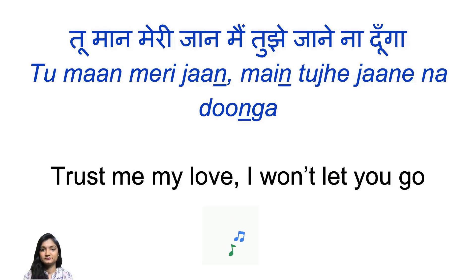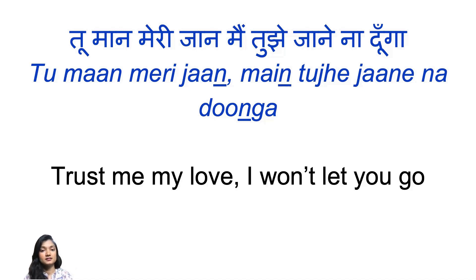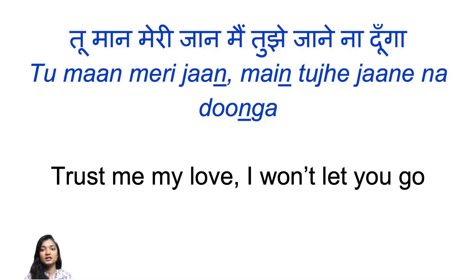And now comes the chorus part. Tu maan meri jaan, ma tujhe jaane na dun ga. Maan comes from the verb maanna, which means to trust or to believe. So the first part means: believe me or trust me, my love. The second part is: main tujhe jaane na dun ga — which means I won't let you go, or I won't lose you. Jaane dena means to let go or to lose.